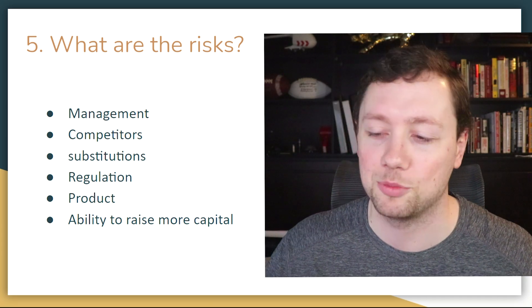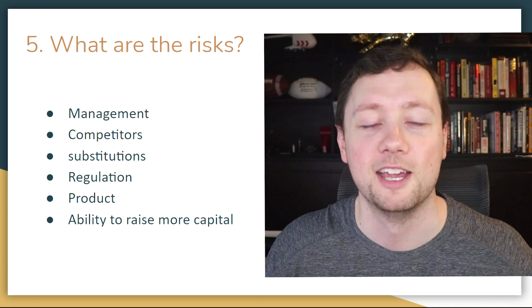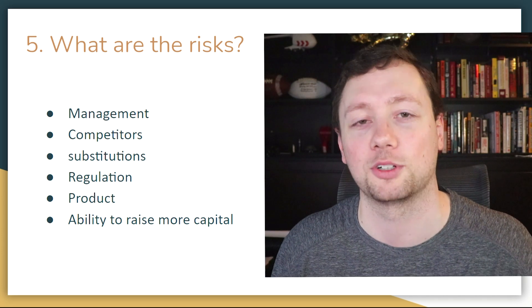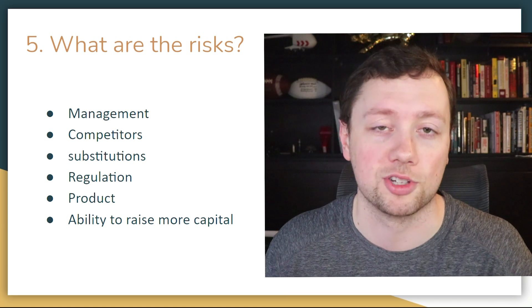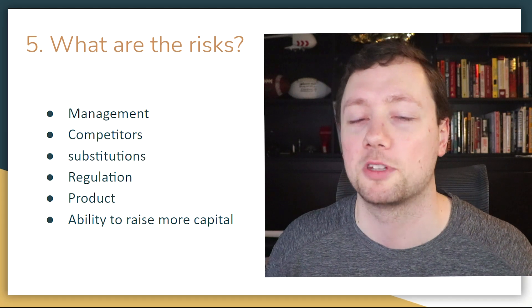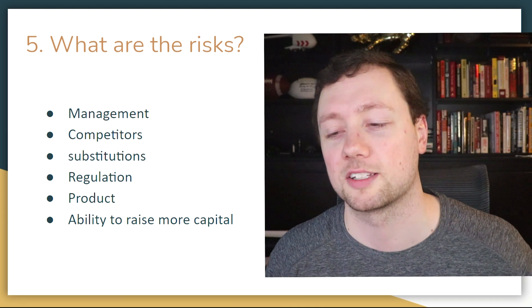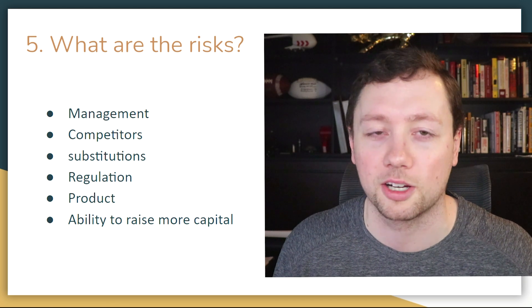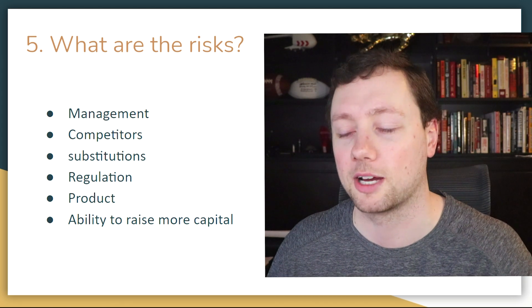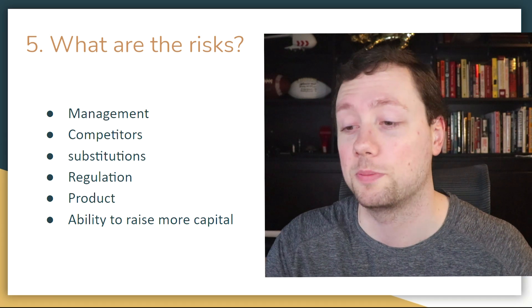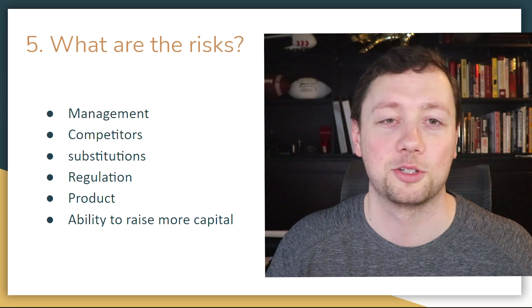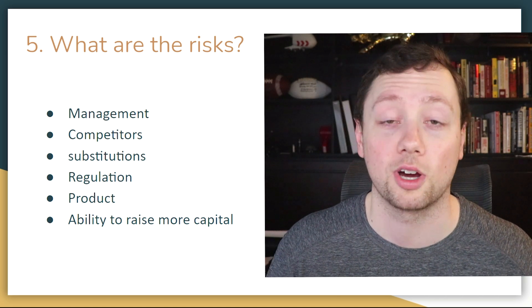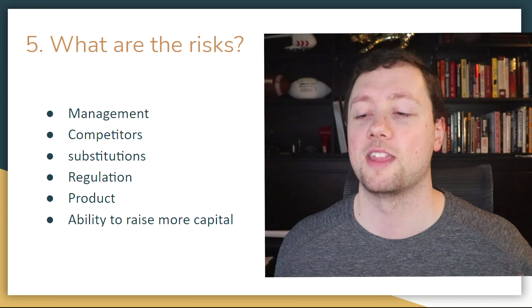Risk number three is regulation. If you're in the cannabis space, alcohol, or any highly regulated industry, those regulations can change at any point and have a drastic impact on your business. You need safer margins, a bigger balance sheet, and the ability to weather regulatory storms. Risk number four is product risk. A major recall on a premier car model is a huge product risk. For a company in the autonomous flying taxi space, one vehicle going down would be a major product issue — same thing with Boeing.